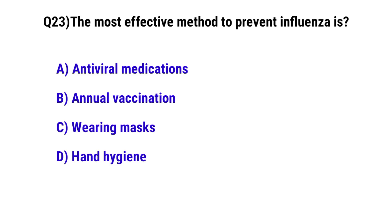Question No. 23: The most effective method to prevent influenza is — the correct option is B: annual vaccination.